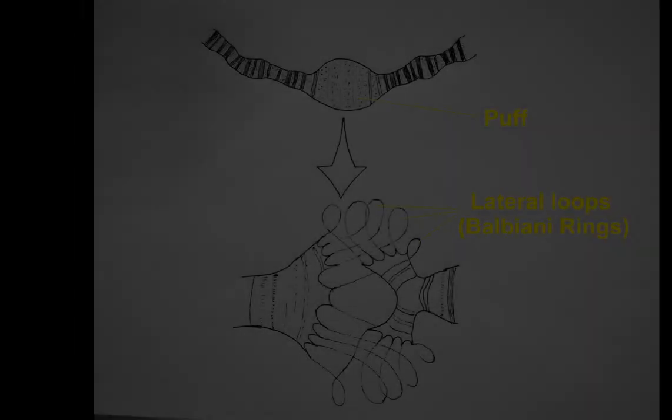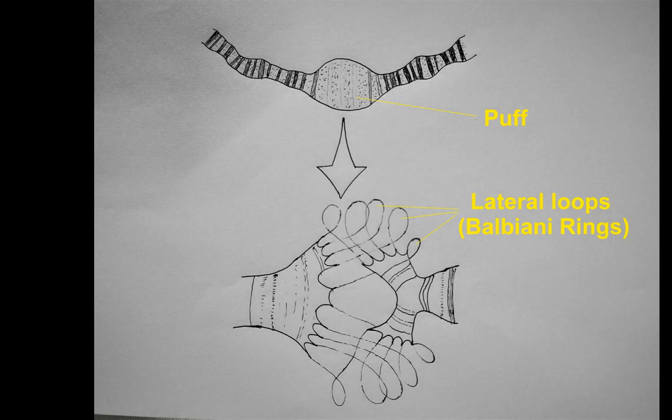Certain chromomeres or bands become enlarged at certain times to form swellings called puffs. These puffs result from localized uncoiling of individual chromomeres in a band during genetic activity, which open out to form many loops. The puffs indicate the site of active genes where mRNA synthesis takes place. The chromomeres of puffs give out a series of lateral loops which appear as rings called Balbiani rings, and are the site of active transcription.